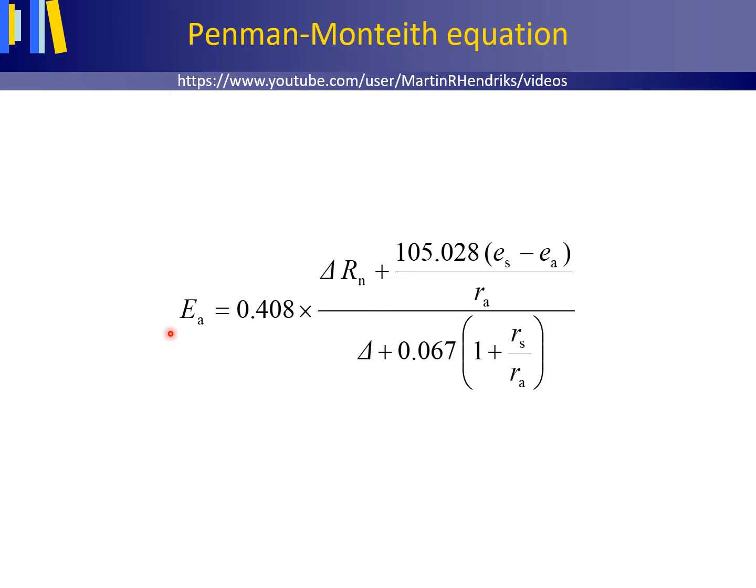The Penman-Monteith equation shown here, named after the work of British physicist Penman in 1948 and Monteith in 1973, is a physically based method for estimating the actual evaporation EA, or under unstressed conditions, the potential evaporation EP, based on both the energy balance and atmospheric demand.